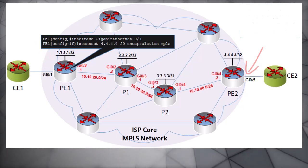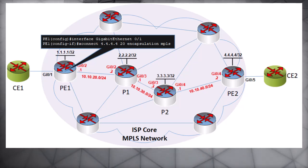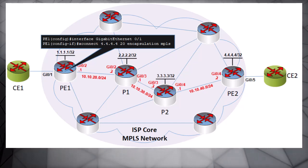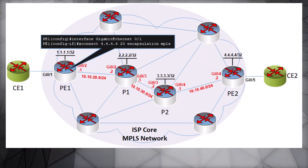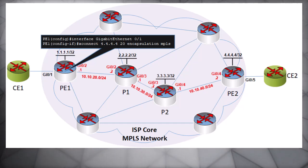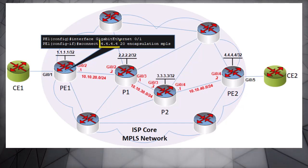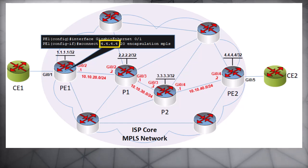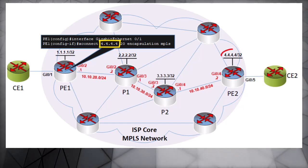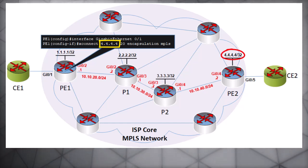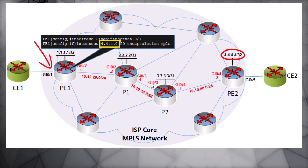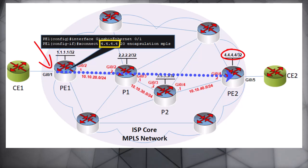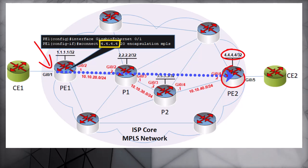Pseudowires always function at layer 2. XConnect and pseudowires are not specific to MPLS — the command supports encapsulation types other than MPLS as well. As you can see, the command uses a destination IP address of 4.4.4.4, which is the loopback address of PE2, so we are creating on this interface a layer 2 pseudowire circuit that terminates on PE2.